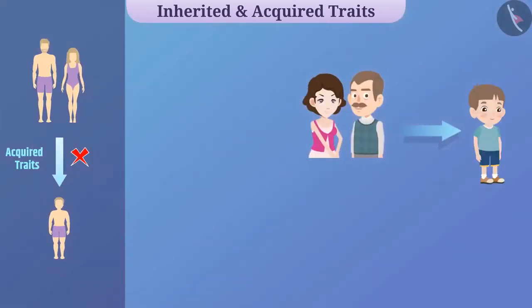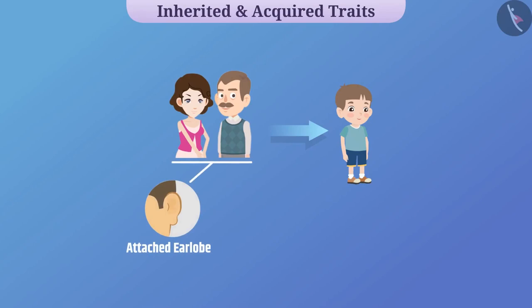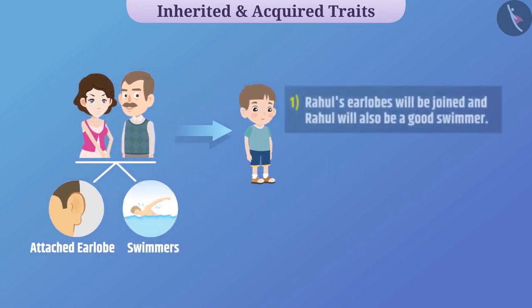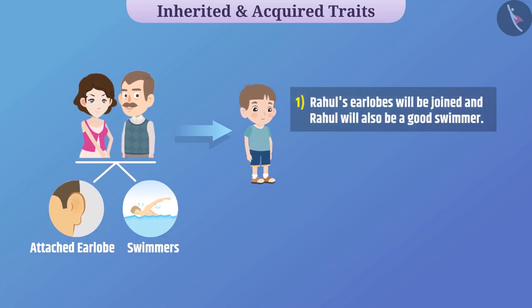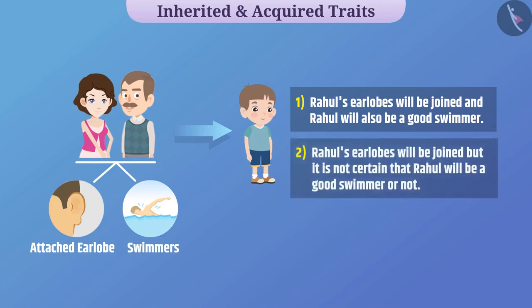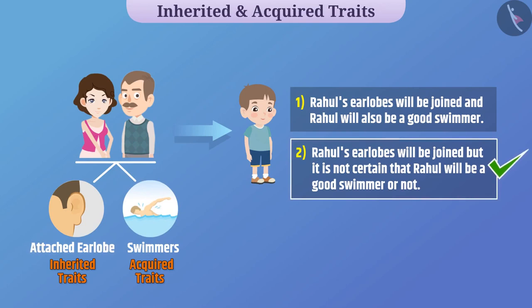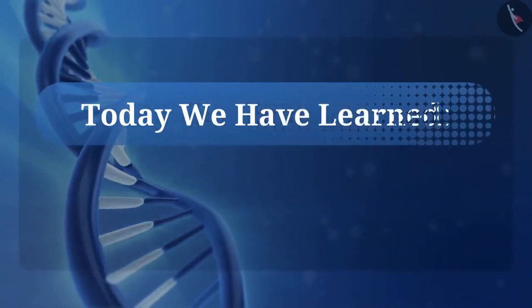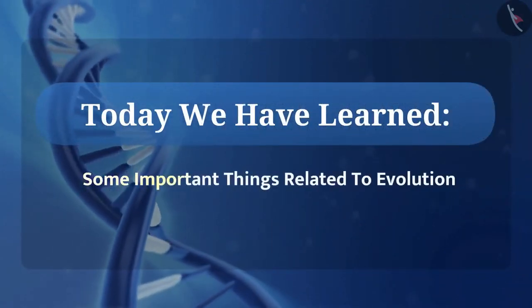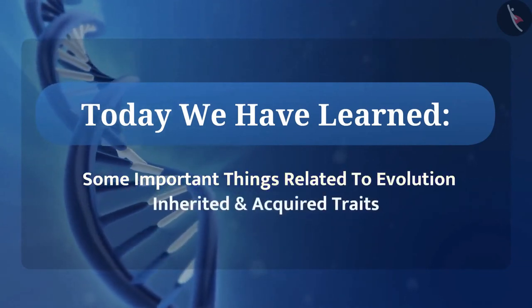If Rahul's mother has attached earlobe and Rahul's father also has attached earlobe, and both are good swimmers, what can be said certainly about Rahul? Rahul's earlobes will be attached, but it is not certain that Rahul will be a good swimmer. The attached earlobe is an inherited character whereas swimming is an acquired character. Hence, the second option is the correct answer. Today we have learned about some important things related to evolution and inherited and acquired traits.